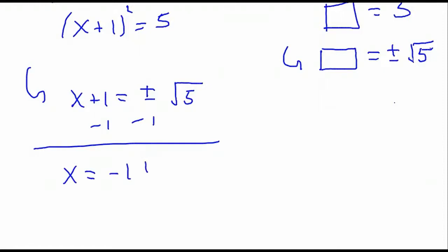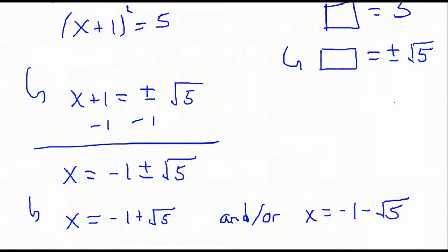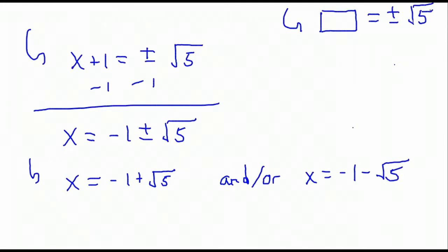That indicates two solutions — don't forget that. It means x could be negative 1 plus the square root of 5, or x could equal negative 1 minus the square root of 5. This is a typical situation — your general quadratic is not necessarily going to have nice, easy integer-valued solutions. You might end up with square roots as part of your answers. So we've got two distinct real-numbered solutions that are not simple; you're not going to guess those answers. But you can double-check that they work.